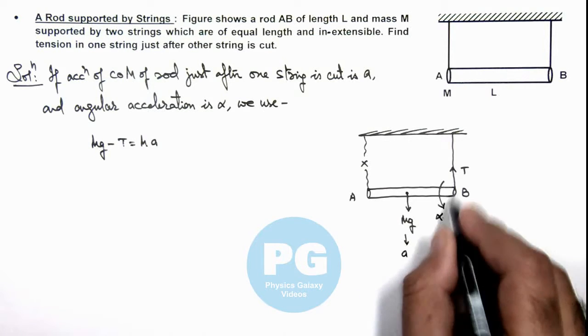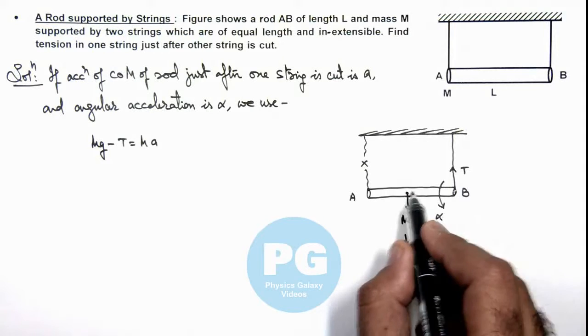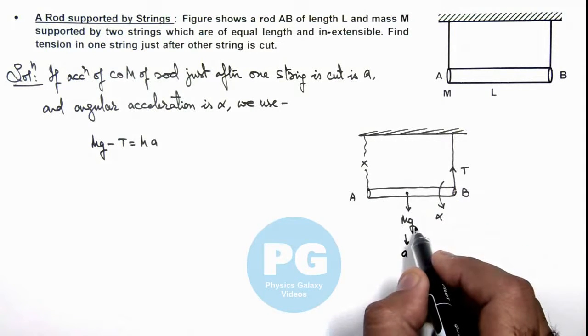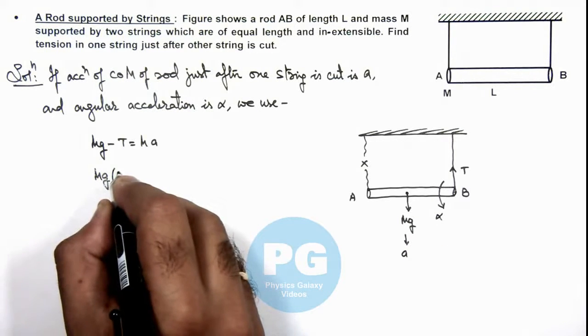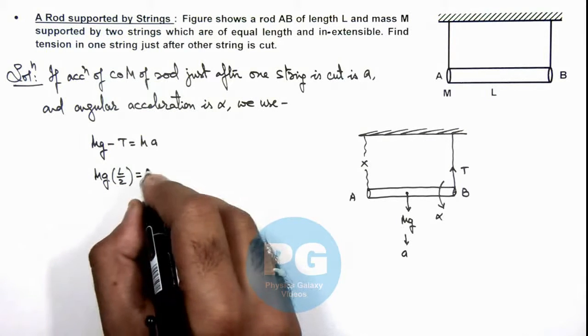And if it is rotating at an angular acceleration alpha about end B, then the torque of tension about B is zero. Only due to the torque of mg it'll rotate. So we can write: mg multiplied by L/2 is equal to I·alpha which is mL²/3...